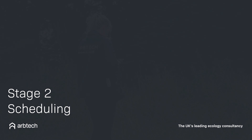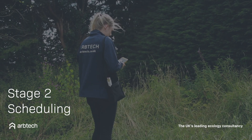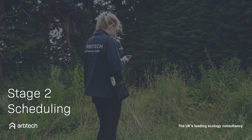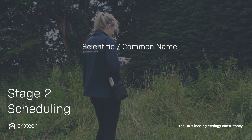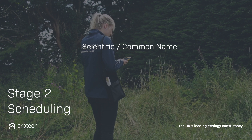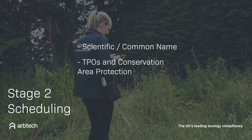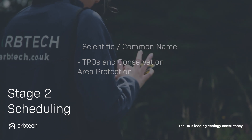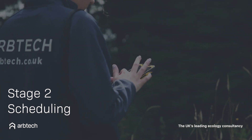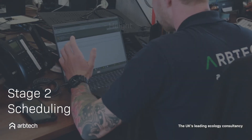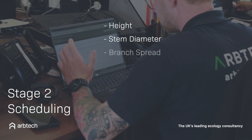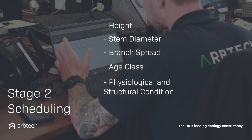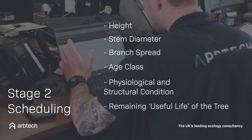Stage two is scheduling. Each tree is given a unique reference number, which is the first stage of the 11-point schedule for every tree in the area. The scientific and/or common name of each species will be noted. If there is a tree preservation order or it has conservation area protection, it should be recorded. Measurements and an evaluation of each tree will be taken, such as height, stem diameter, the branch spread, age class, physiological and structural condition, and the remaining useful life of the tree.